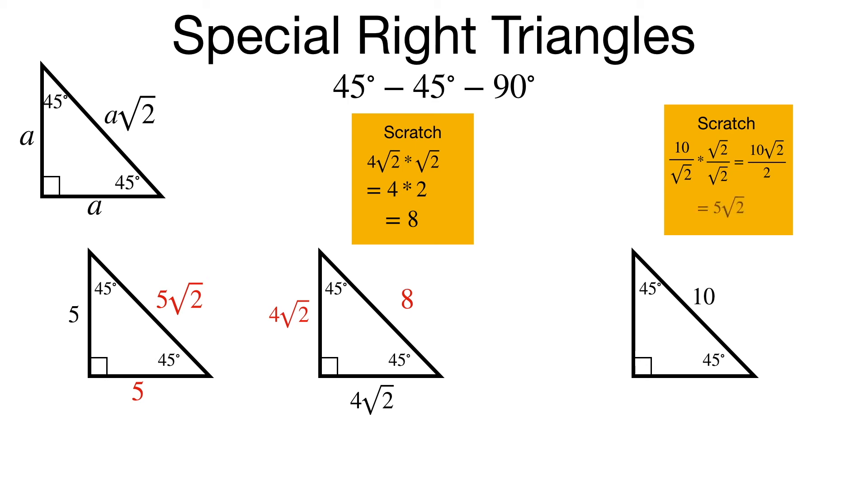I can reduce it, though. 10 over 2 is 5, so each leg length is 5 times the square root of 2.